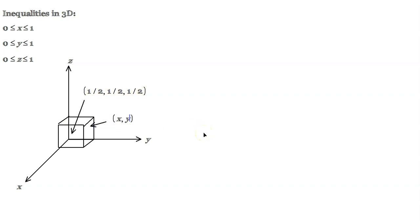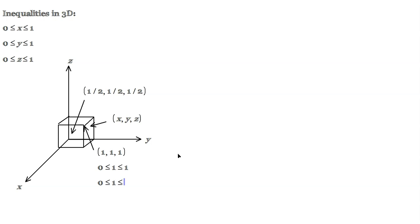In general, x, y, z — this corner point right here is where each coordinate is equal to 1, so that would be the point 1, 1, 1. That works because 0 is less than or equal to 1, which is less than or equal to 1 — that's true. 0 is less than 1 and 1 is less than or equal to 1 — true. 0 is less than or equal to 1 on the y coordinate — true. 0 is less than or equal to 1, which is less than or equal to 1 on the z coordinate — also true.